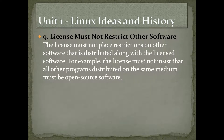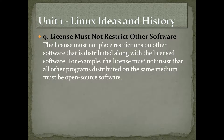Nine: license must not restrict other software. The license must not place restrictions on other software that is distributed along with the licensed software. For example, the license must not insist that all other programs distributed on the same medium must be open source software. That's very important — let's say there is a new Need for Speed game, and they find a very good open source software which can increase the frame rate. They want to include it in their game, but if you have put a clause saying whatever is distributed with my software must be open source too, that means they'd have to give their game for free, which is not possible. That kind of clause should not be there.